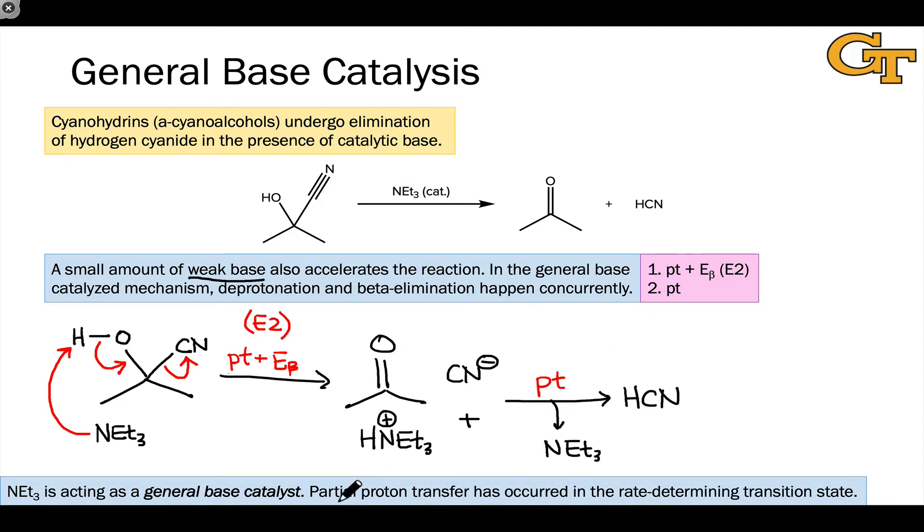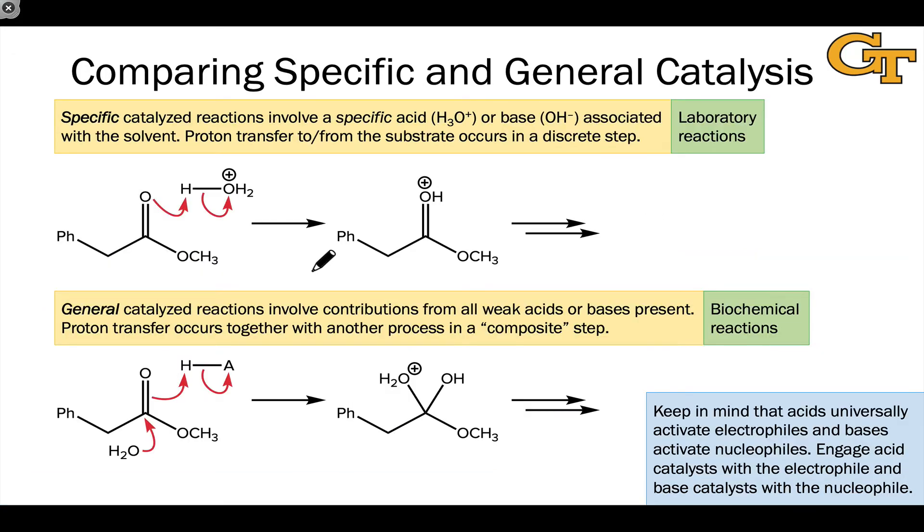As we saw in the general acid case, the hallmark of general base catalysis is partial proton transfer in the business step. We avoid an O-minus intermediate, but there is partial transfer of this proton to the base in the rate-determining transition state.